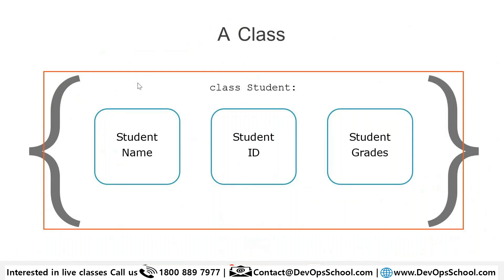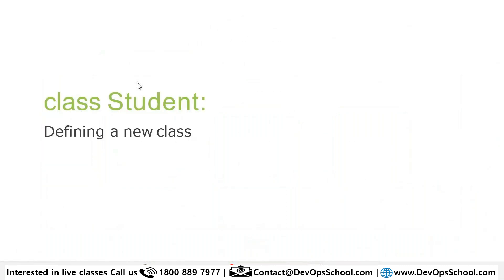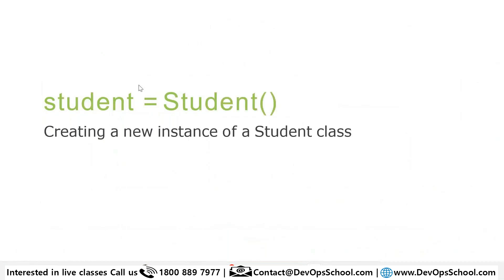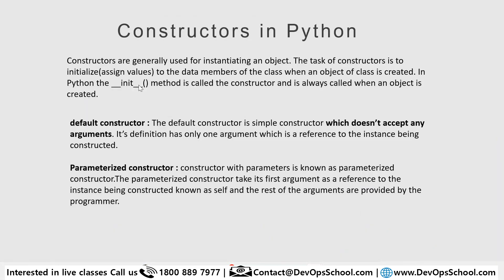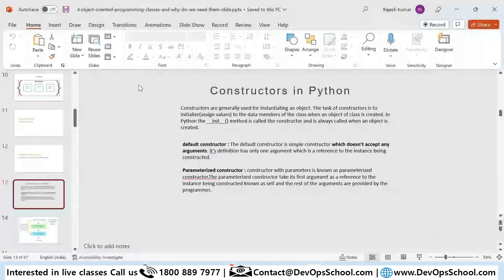In Python you declare a class using the `class` keyword with a constructor. Here `Student` is a new class. If you want to create objects from it, you write `student = Student()` — capital S is the constructor creating a new instance of the Student class. Let me show you one example for easy illustration.